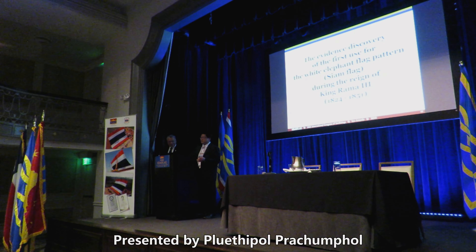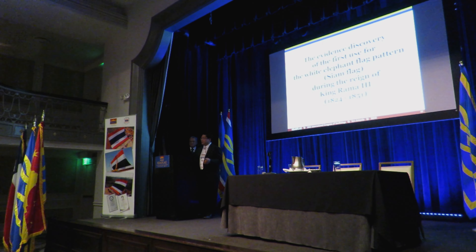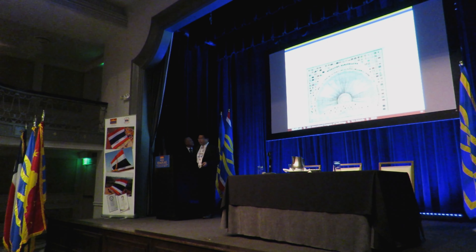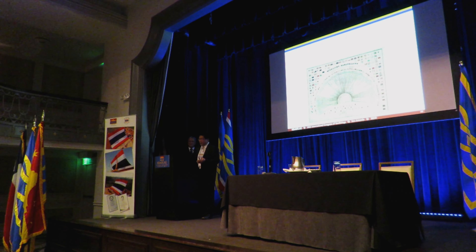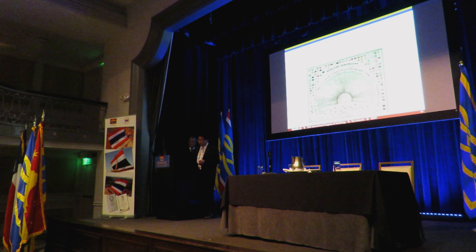Today I would like to correct the information about when we use the white elephant flag as the Siamese national flag. Recently we believed that the white elephant flag had been used after 1851, in King Rama 4th's era. But we found many vintage documents and flag charts that display the Siamese white elephant flag pattern being used before 1851 — that means in the King Rama 3rd era of the Chakri dynasty.